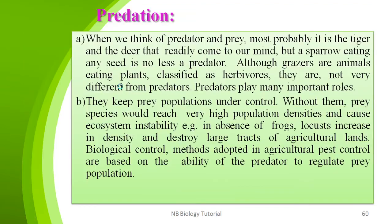Predation — when we think of predator and prey, we most likely think of a tiger and a deer. But a sparrow eating a seed is no less a predator. Grazers — animals eating plants — are classified as herbivores but are not very different from predators. Predators play an important role in keeping prey populations under control; without them the prey species would reach very high population density and cause ecosystem instability. For example, in the absence of frogs, locusts increase in density and destroy large tracts of agricultural land.